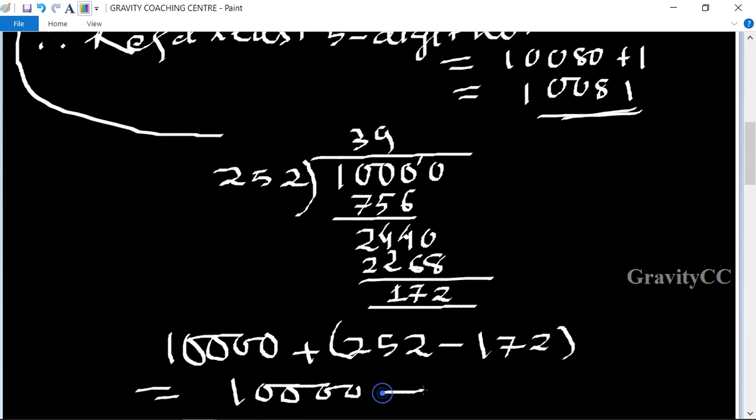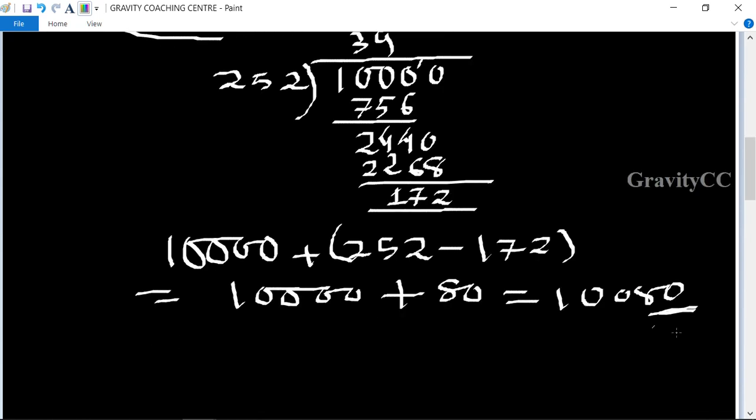This equals 10,000 plus 80 equals 10,080. Here 10,080 is divisible by all these numbers. But we need all remainders to be the same when divided. This will be exactly divisible by all. So we will add the least number, add one.